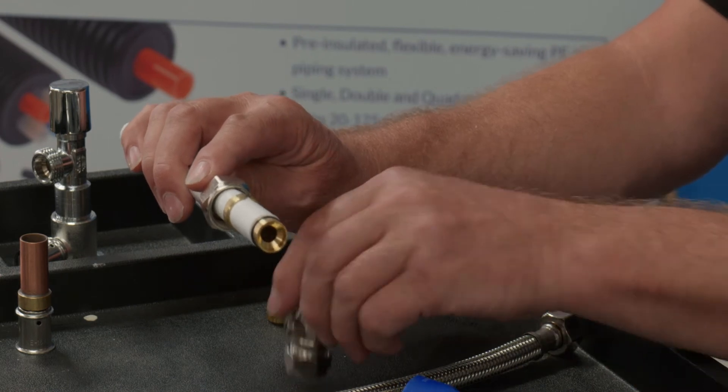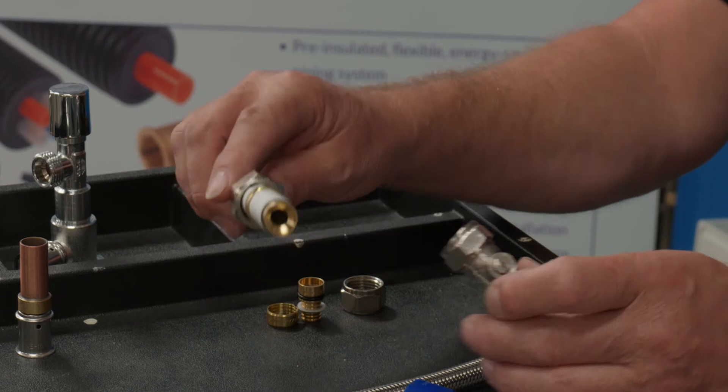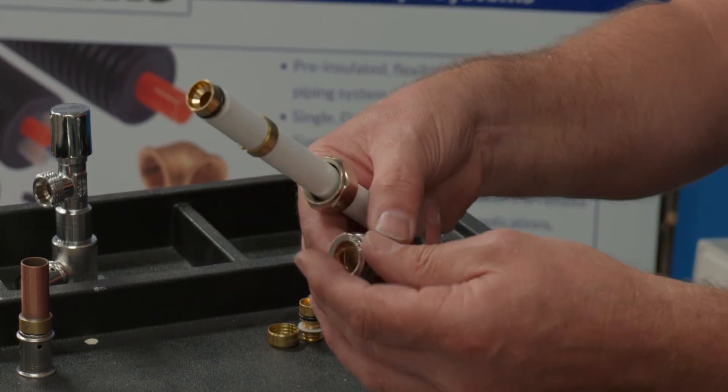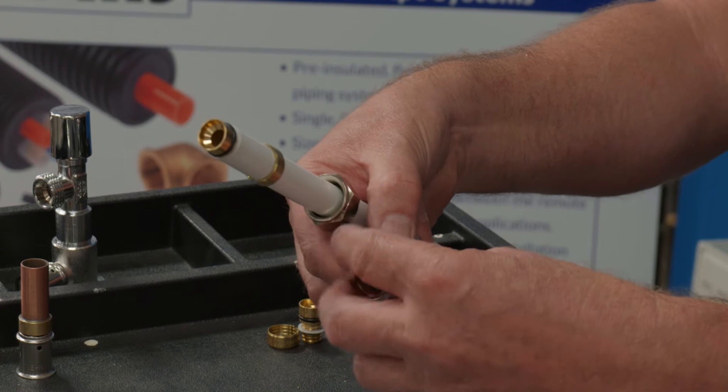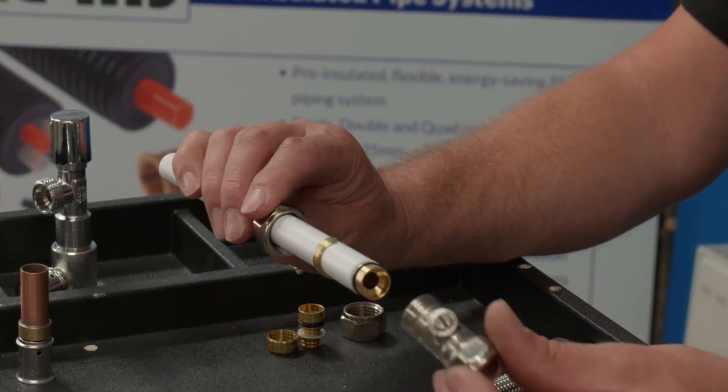and then any standard 15mm compression fitting. So whether it be a flexible tap connector or in this case this Bullifix valve, all we're going to do then is just remove the nut and olive that comes with the product and we're going to replace that with our adapter.